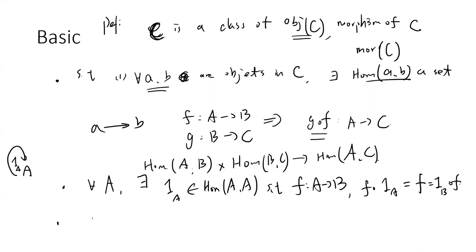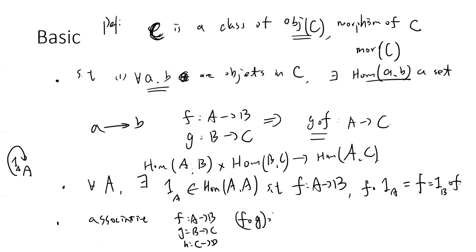The final condition is that composition is associative. So if you have f from A to B, g from B to C, and h from C to D, then you must have (f∘g)∘h = f∘(g∘h). This is the definition of a category.